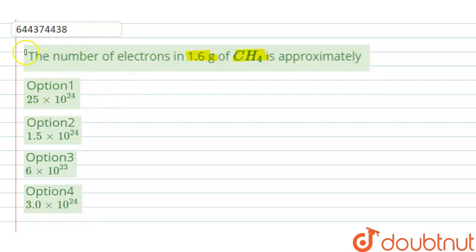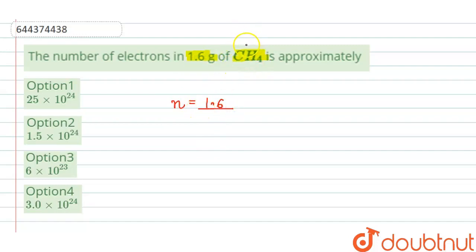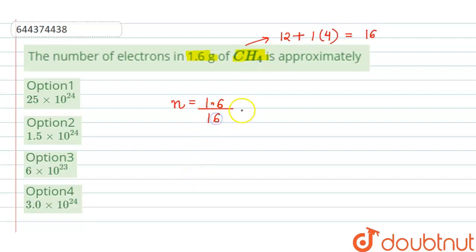First we calculate the number of moles in 1.6 grams of CH₄. It will be equal to the mass of CH₄ in grams, which is 1.6, divided by its molecular mass. The molecular mass of CH₄ will be the atomic mass of carbon, which is 12, plus the atomic mass of hydrogen, which is 1, multiplied by 4 since there are 4 hydrogens, so it will be 16.